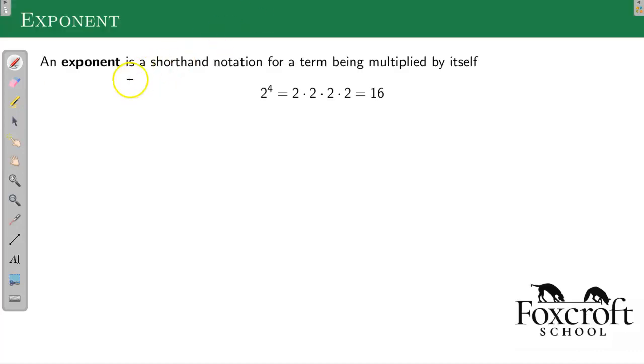Alright, so an exponent is a shorthand notation for a term being multiplied by itself. So 2 to the 4th just means we have 4 copies of 2 being multiplied by itself.